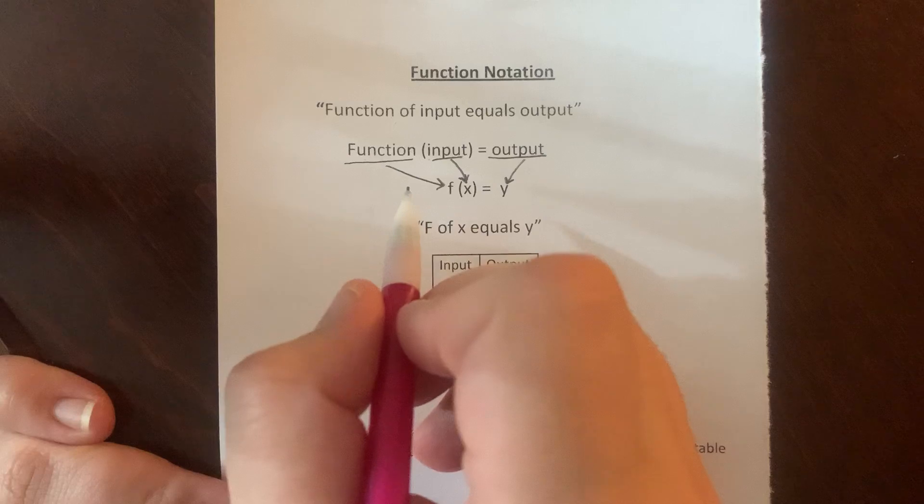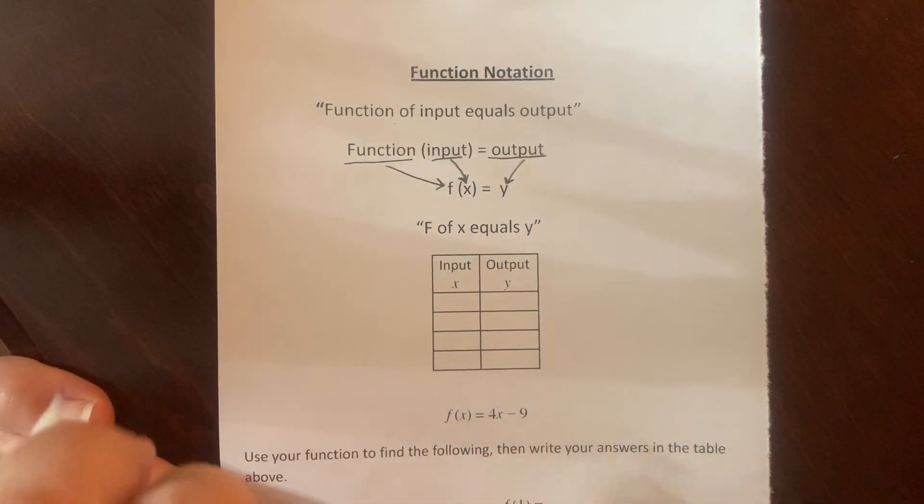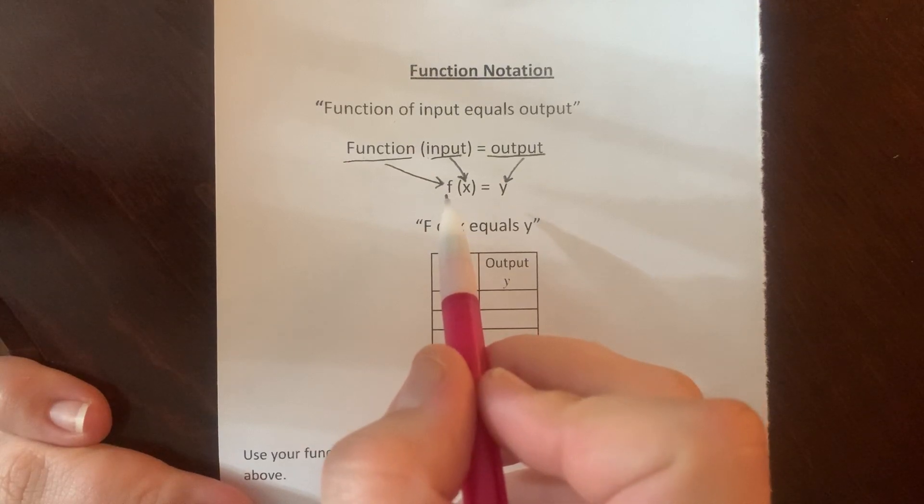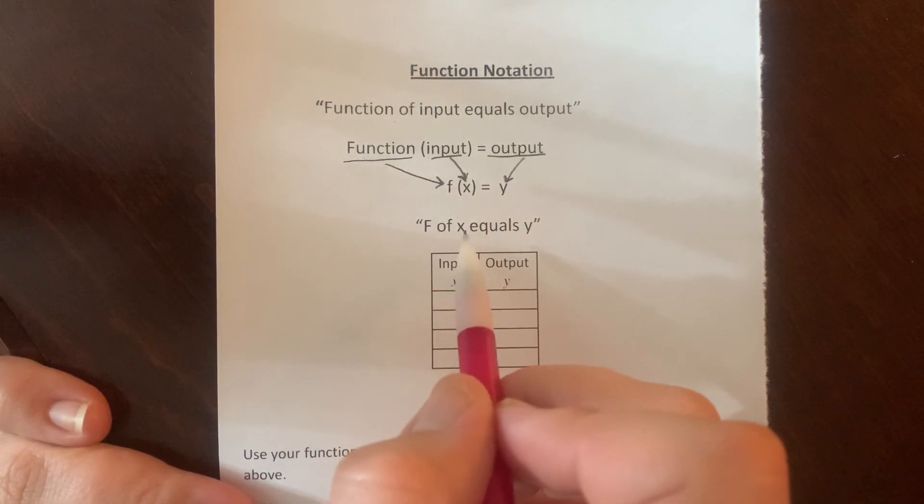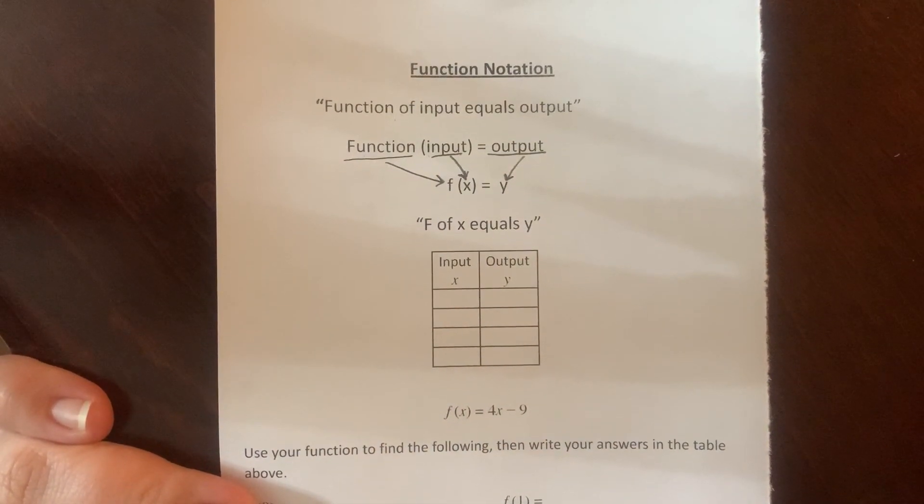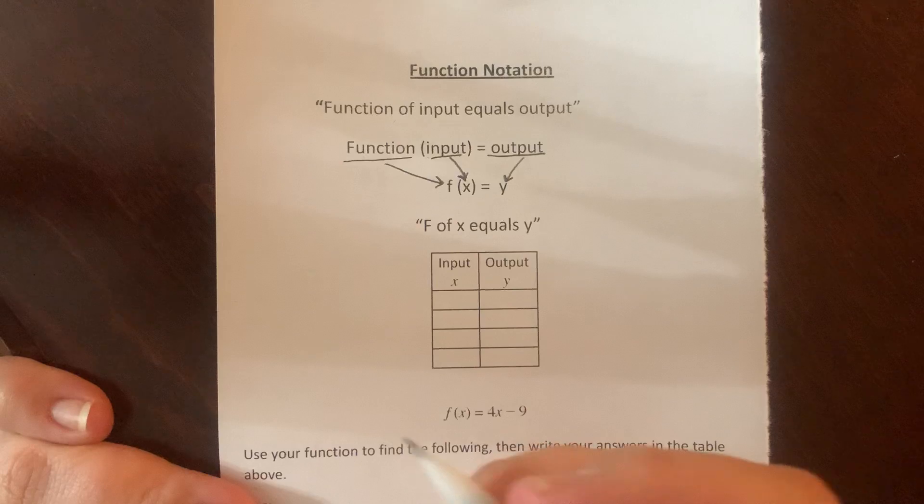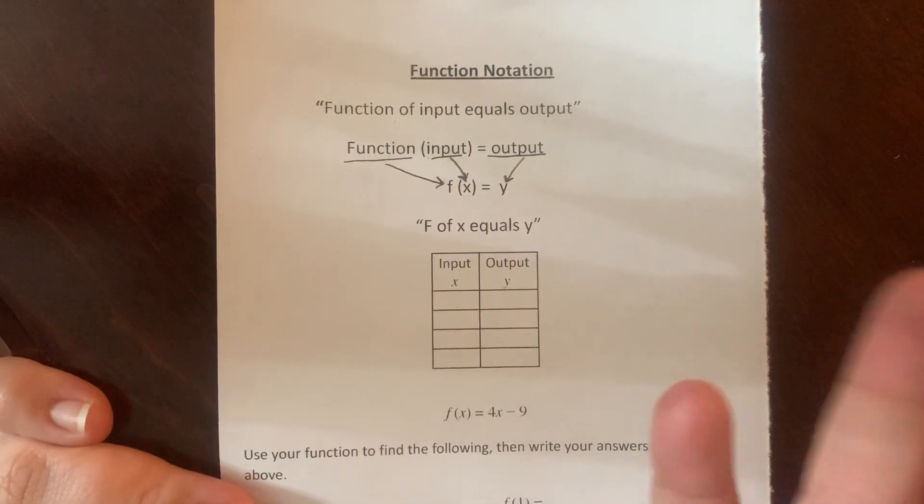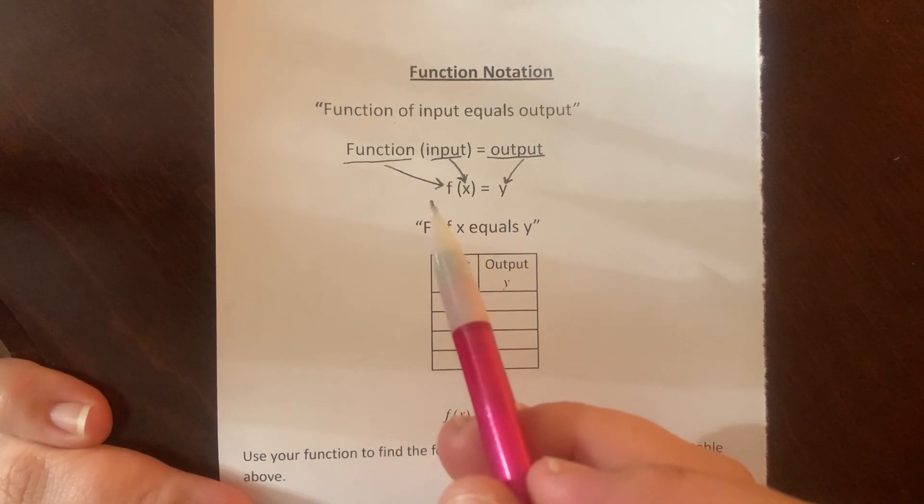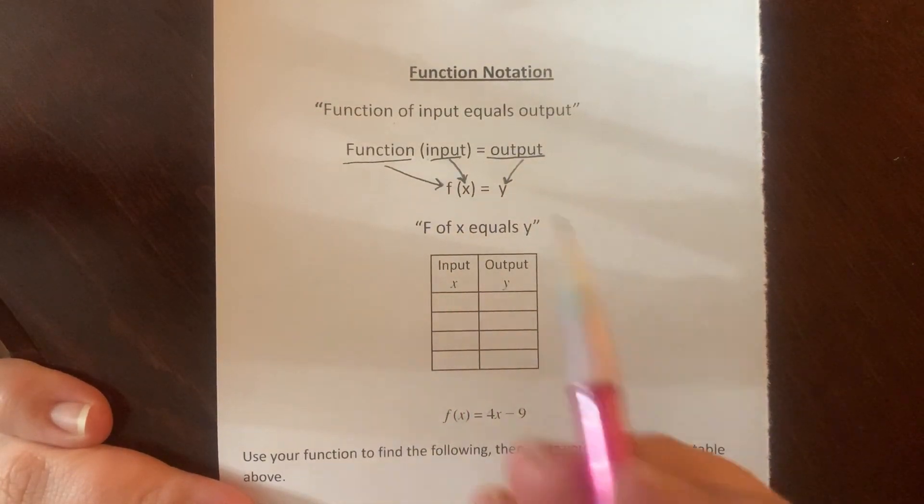Now functions could have different letters. They might be G or H or W. And as you go on in algebra, this letter might change. So it wouldn't matter if it said W parentheses X, it would be W of X equals Y. So if you're talking about two different functions at the same time, you need to give them different names. One could be H, one could be J, one could be K, one could be L. We just give them different names or different letters to signify which one we're talking about.